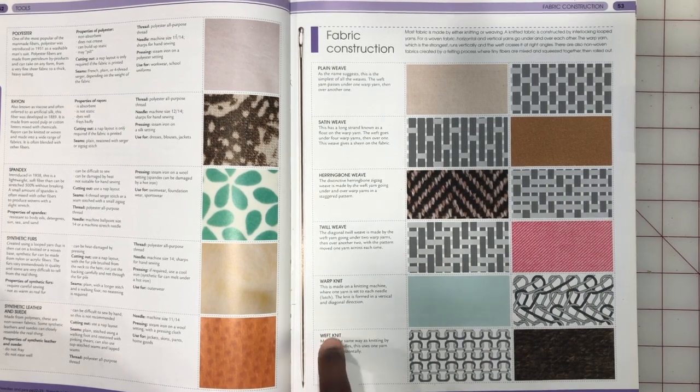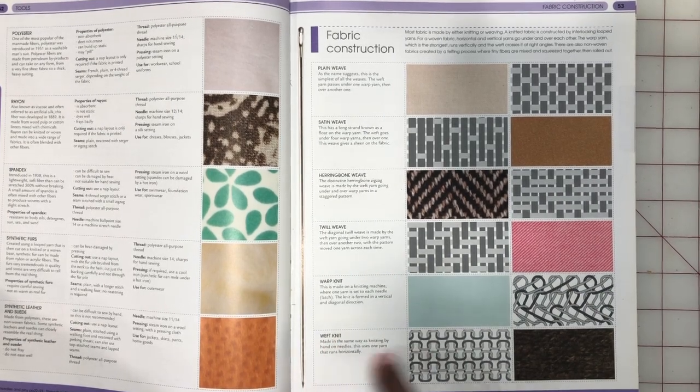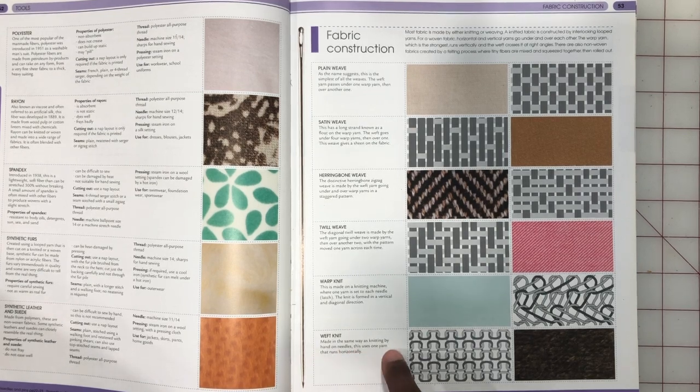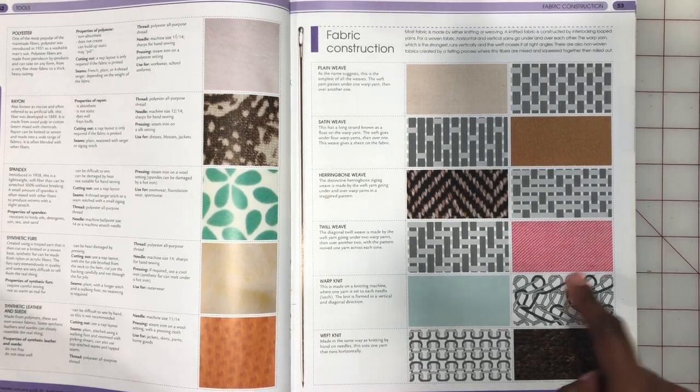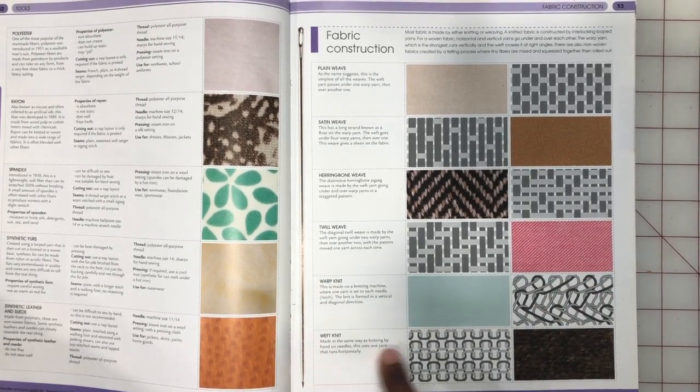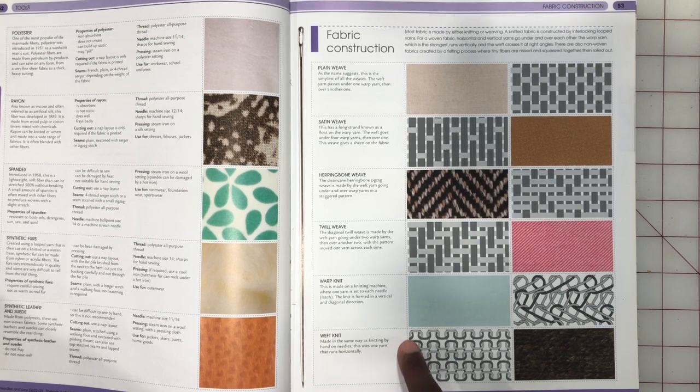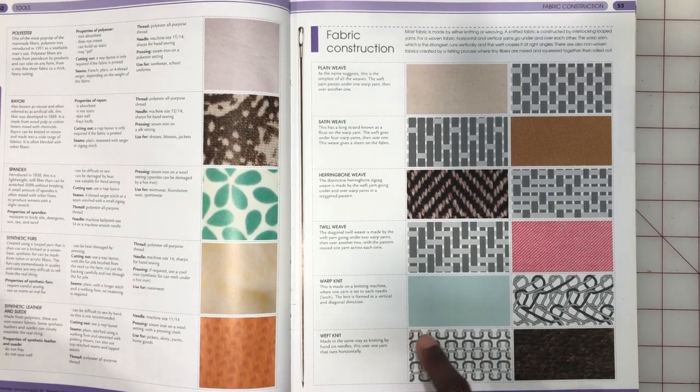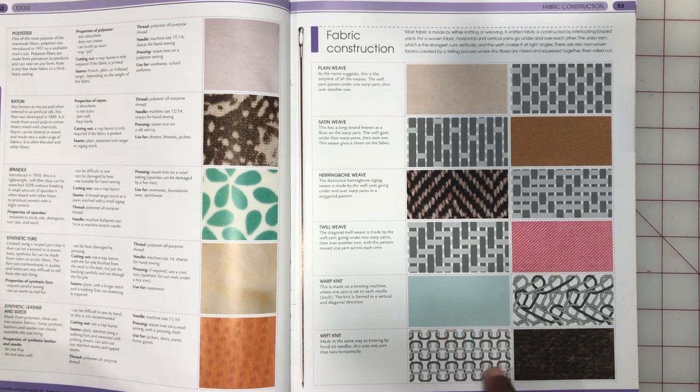And lastly we have the weft knit. Another form of knitting, it's made the same way as knitting by hand on needles, and it uses one yarn that runs horizontally. So as you can see, instead of here where it runs a little more diagonally in the warp knit, the weft knit, as the name suggests, goes across horizontally but still maintaining those looping patterns.